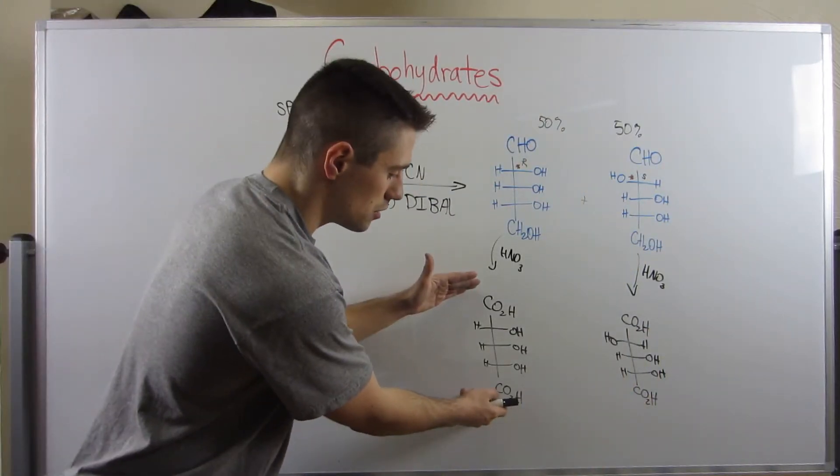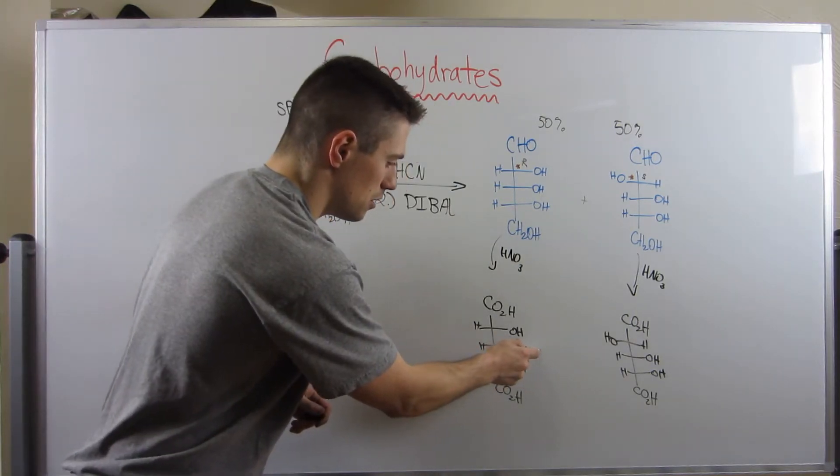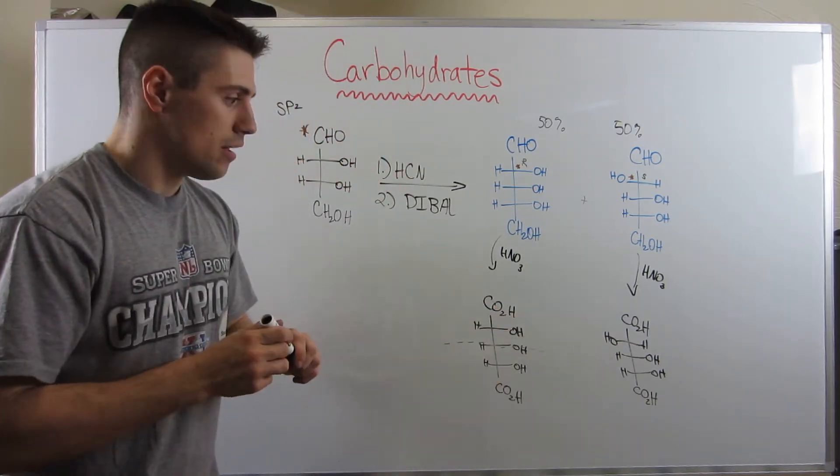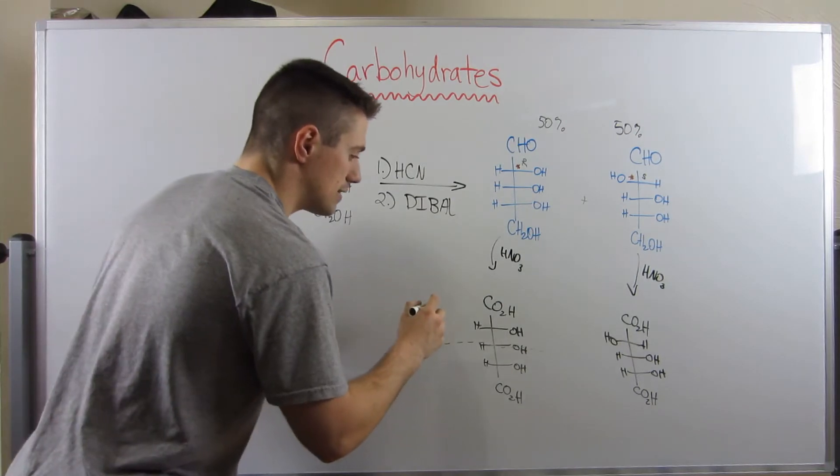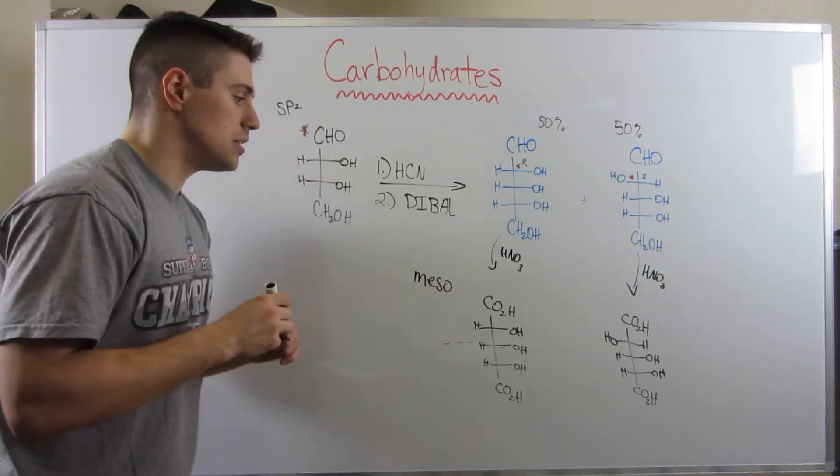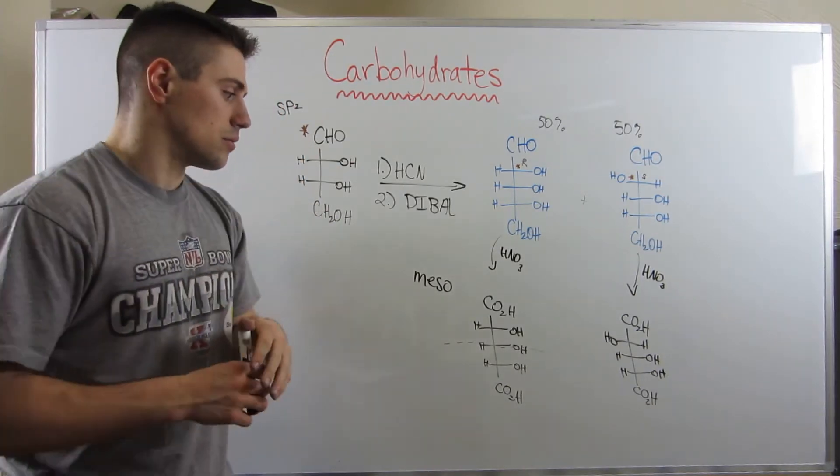Can you guys see that this structure has a plane of symmetry right across the middle, whereas this one does not? Now this structure, throwback major long term ago, since it is symmetrical it's meso. And meso structures aren't chiral. They don't rotate the plane of polarized light.